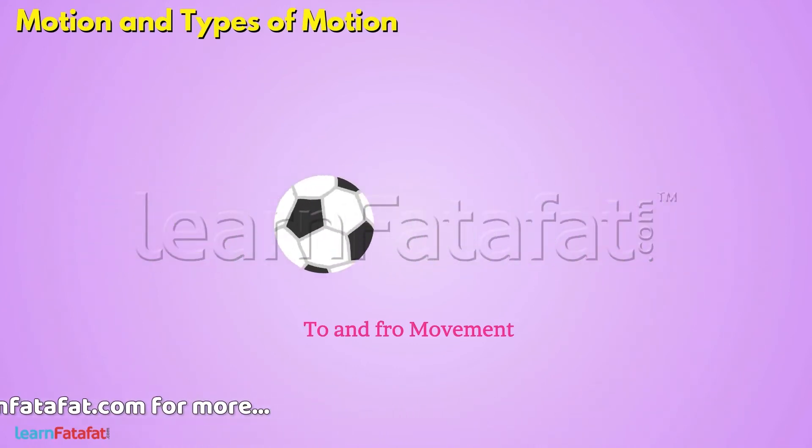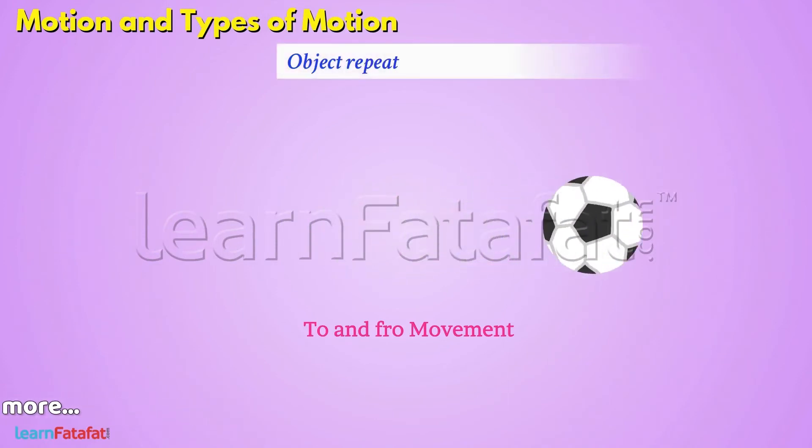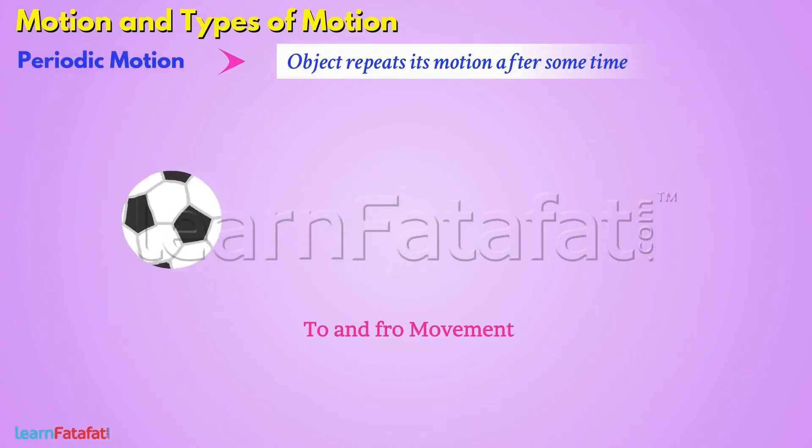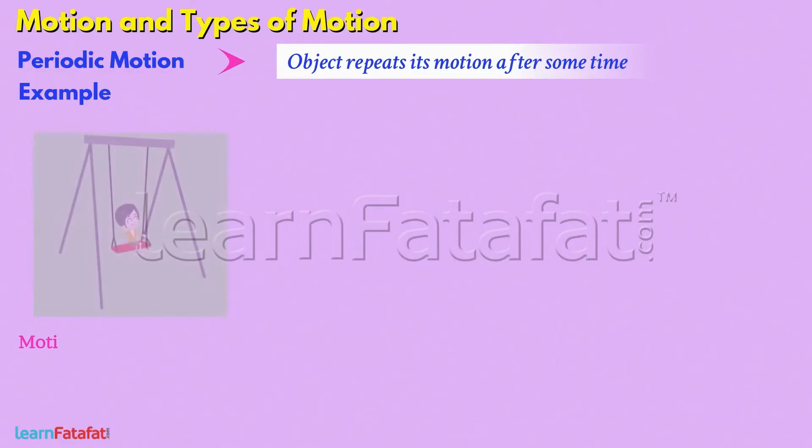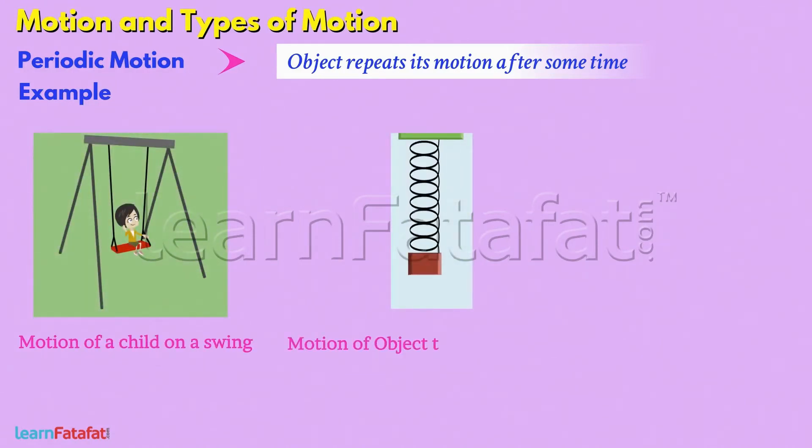Such a motion in which an object repeats its motion after some time is called periodic motion. Other examples of periodic motion include motion of a child on a swing, motion of an object tied to a spring.